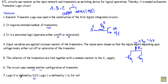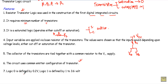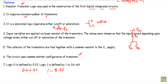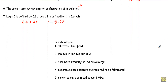Seventh, for logic 0 we will apply 0.2 volts, and for logic 1 we will apply 1.2 to 3.6 volts. Logic 0 is defined by 0.2 volts and logic 1 is defined by 3.6 volts. These are the features of our RTL logic family.